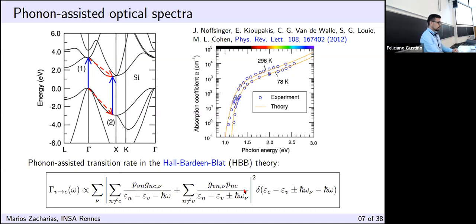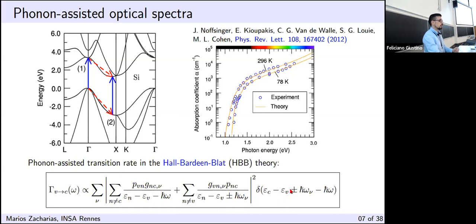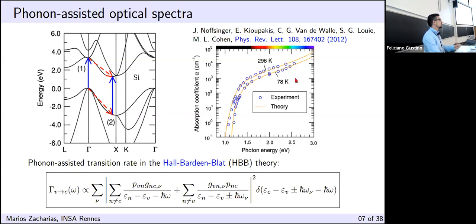This procedure has been described by the Hall-Bardeen-Blatt theory, developed in 1954. Inside the square modulus, we have two terms guiding the phonon-assisted transitions: P is the optical matrix element, G is the standard electron-phonon matrix element, and in the denominator we have the Kohn-Sham energies and the photon energy. The other term includes plus or minus the phonon energy, accounting for phonon emission and absorption. Inside the delta function, we ensure energy conservation. The first implementation appeared in 2012 by Manos and Noffseger, who calculated the phonon-assisted spectra of silicon in excellent agreement with experiment.